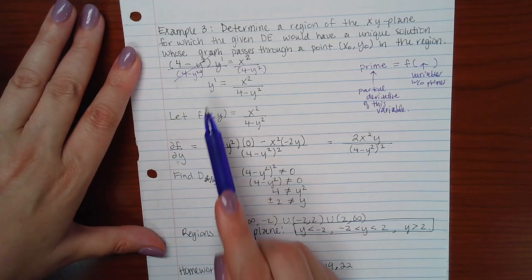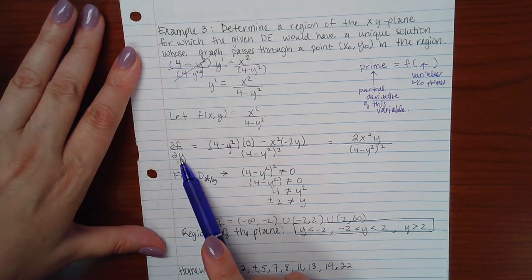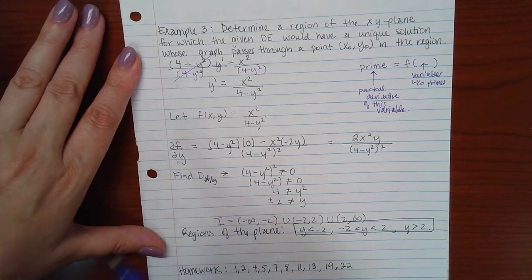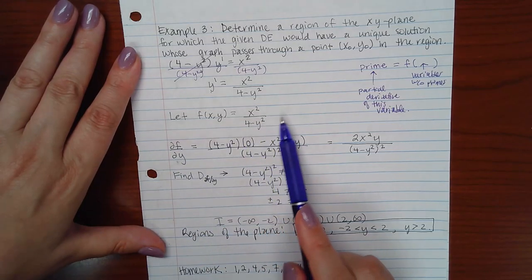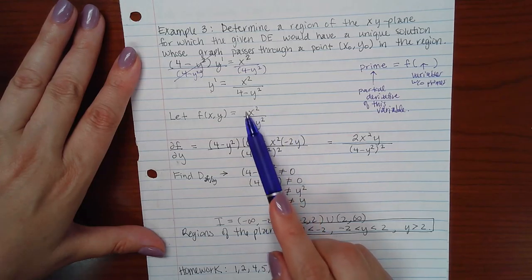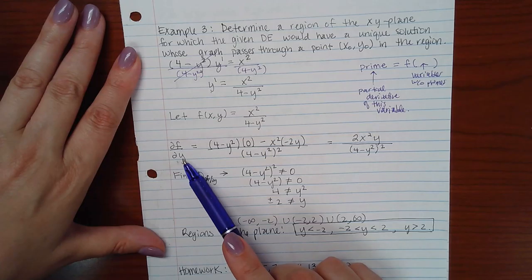Then, because I have y prime here, I'm going to go ahead and take the partial derivative with respect to Y. Which means that any term with an X in it is treated as a constant. So this guy right here will be treated as a constant when I'm taking the derivative with respect to Y.